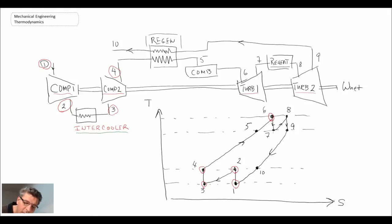We then go through the first stage of expansion through the turbine, taking us to state seven. We then do a reheat process, which is another combustion process, taking us to state eight. We then come through another turbine, taking us down to state nine. And then finally, we go into the regenerator, taking us to either ten or one in terms of exhausting.